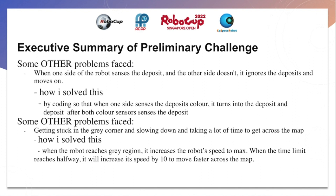Other problems I faced were when one side of the robot senses the deposit and the other side doesn't, it ignores the deposit and moves on. I solved this by coding it so that when one side senses the colour of the deposit, it turns and moves in the deposit's direction.